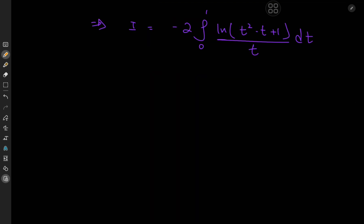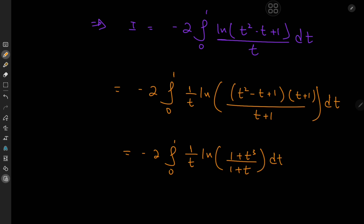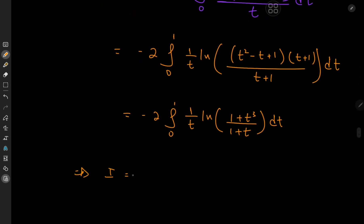The integral we now have is pretty straightforward — all we need is some algebraic manipulation of the argument of the logarithm. We'll write this as negative 2 times the integral from 0 to 1 of 1 over t times the logarithm of t squared minus t plus 1. Expanding using t plus 1 gives t cubed plus 1 in the numerator, so we have negative 2 times the integral from 0 to 1 of 1 over t times the logarithm of 1 plus t cubed divided by 1 plus t, dt. Using the properties of the logarithm, we can write this as the difference of two logarithms.